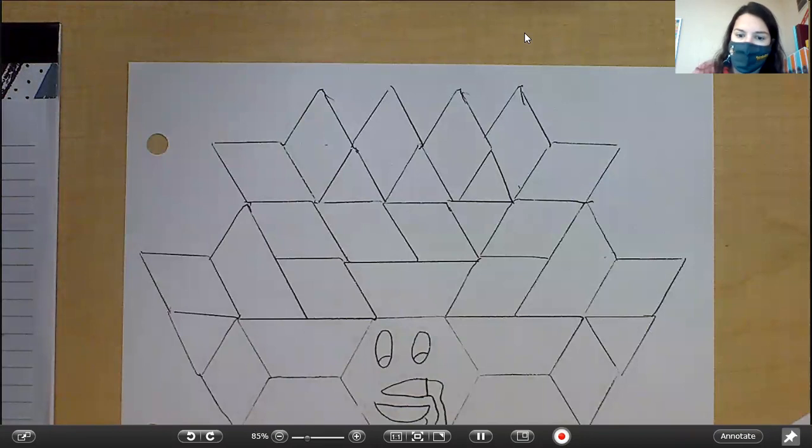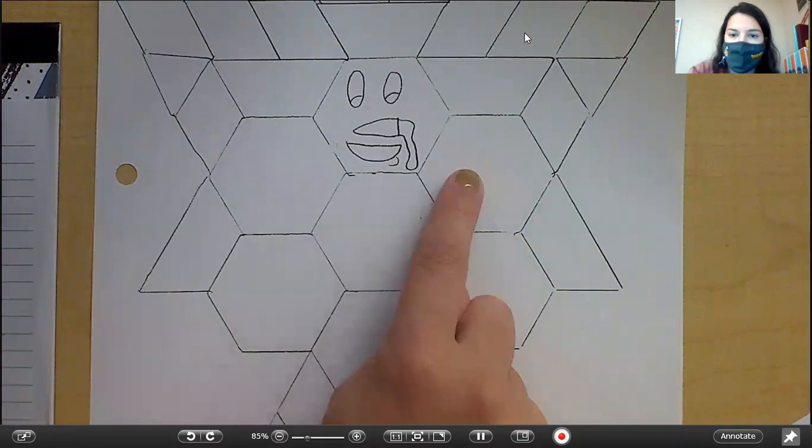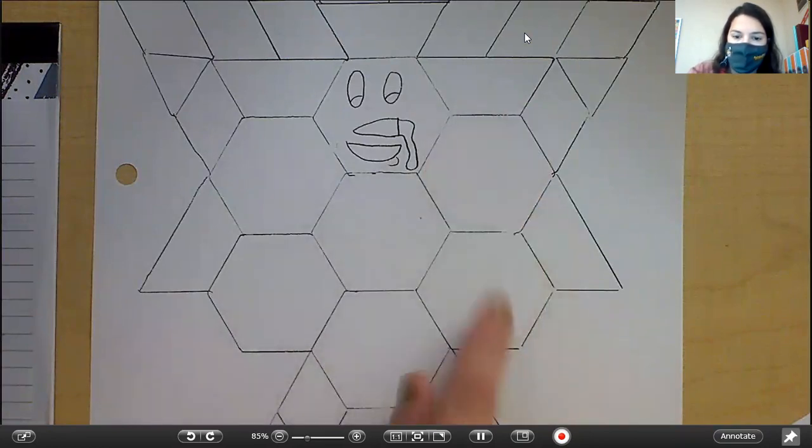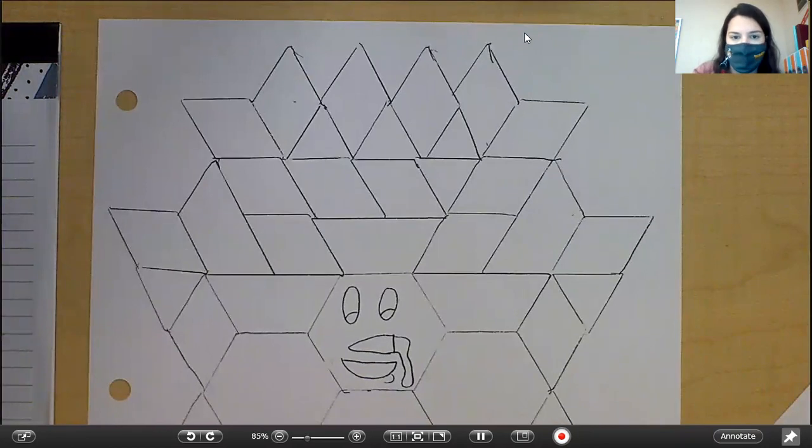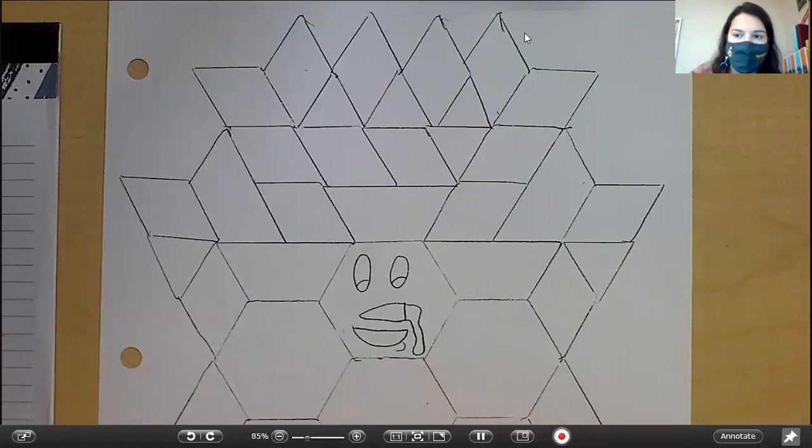So here's an example of mine. I use the hexagons down here for the body, and then I just filled in the shapes to make my turkey. You can color yours too if you would like. But this is kind of what you're going to do. And no one's turkey is going to be the same.